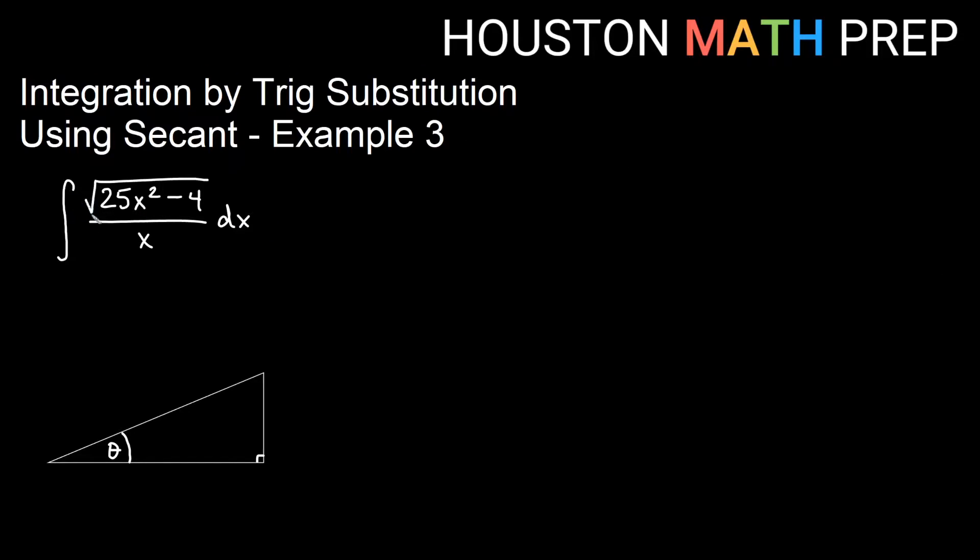We've got the antiderivative of square root 25x squared minus 4, all of that over x. We can't really break this up because there are separate terms in the root, nothing to do so we need to see this as some variable expression squared minus some constant expression squared.